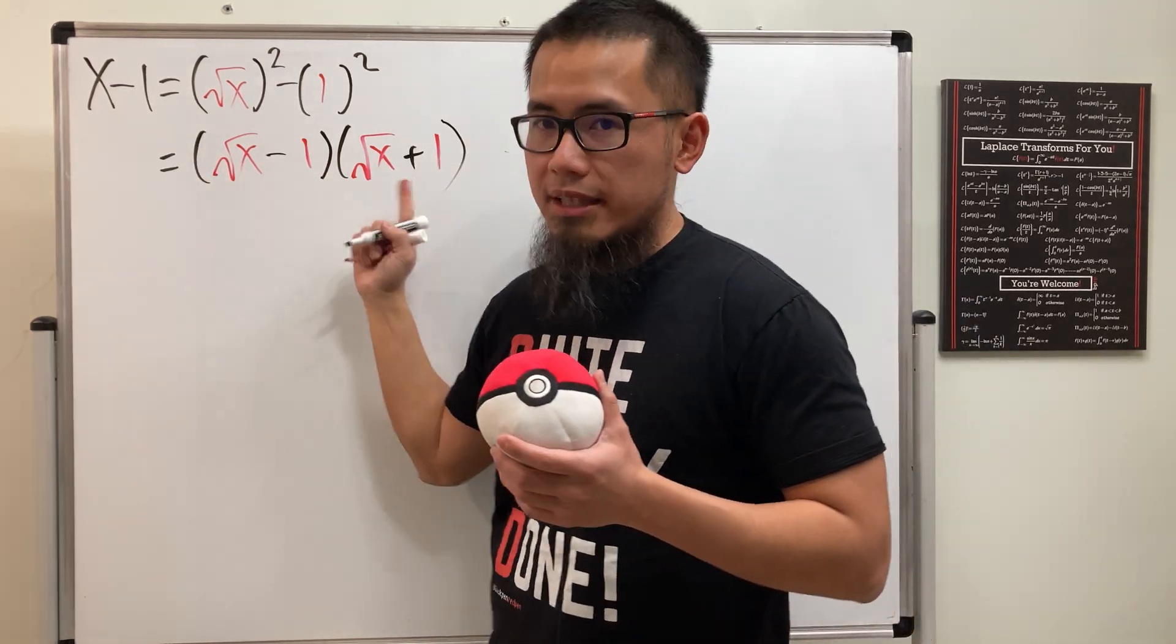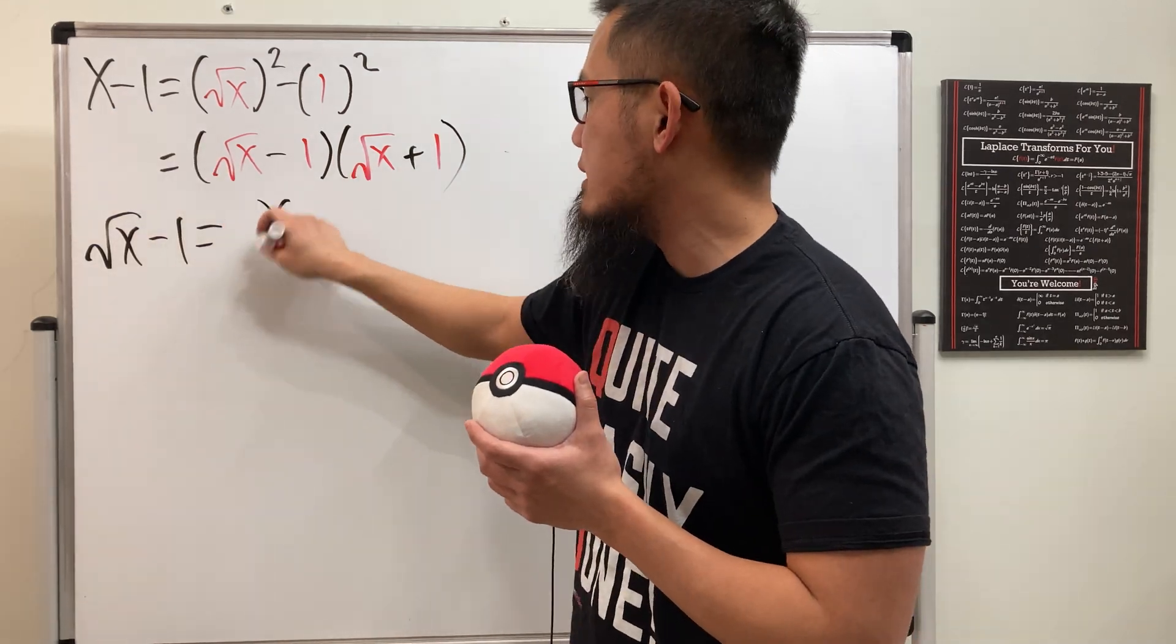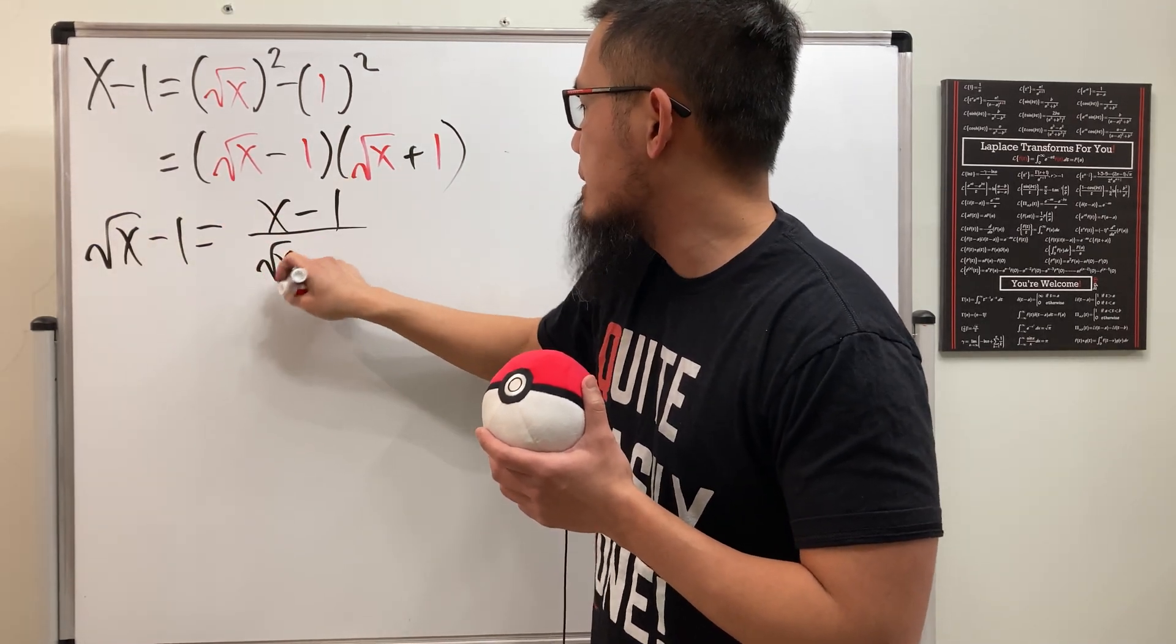And now, I'm going to look at this and that, keep this on one side, so we have square root of x minus 1. This is going to be this over that, right? So we have x minus 1 over square root of x plus 1.